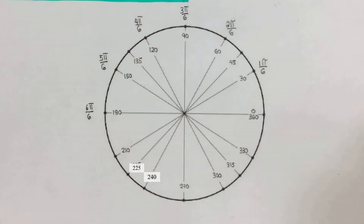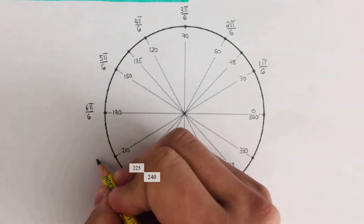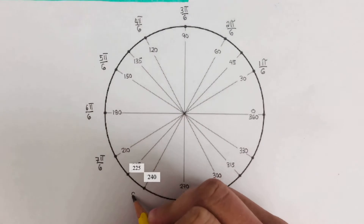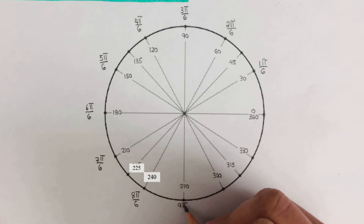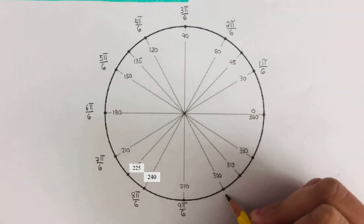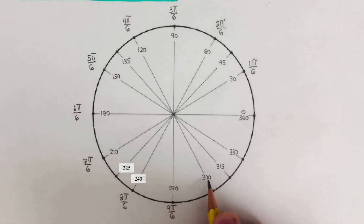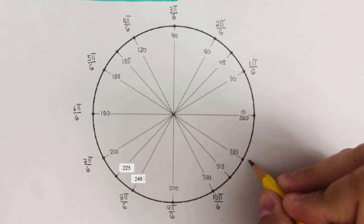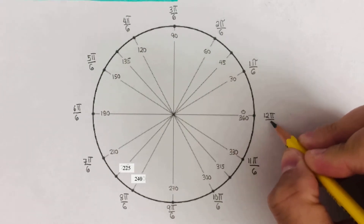And then continuing — it's an interval of 30. So this would be 7π/6. This is 8π/6. This is gonna be 9π/6. The interval is by 30: 270 plus 30 is 300, so this would be 10π/6. And this one right here is 11π/6. And this one right here would be 12π/6.